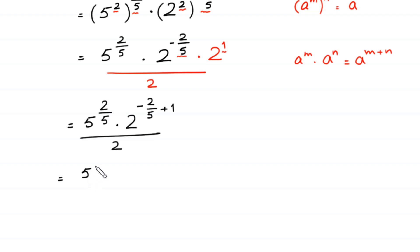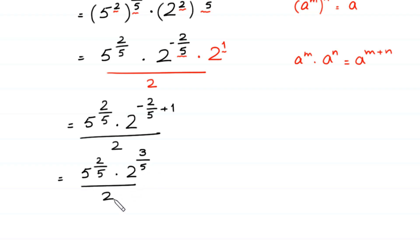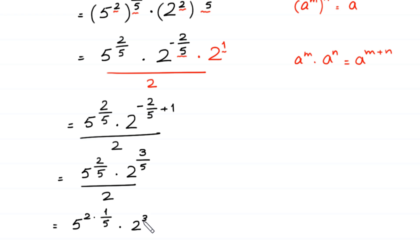Next, we have 5 to the power 2 over 5, times 2 to the power negative 2 over 5 plus 1, which equals 3 over 5, divided by 2. We can write 5 to the power 2 over 5 as 5 squared times 1 over 5, and 2 to the power 3 over 5 as 2 cubed times 1 over 5, divided by 2.